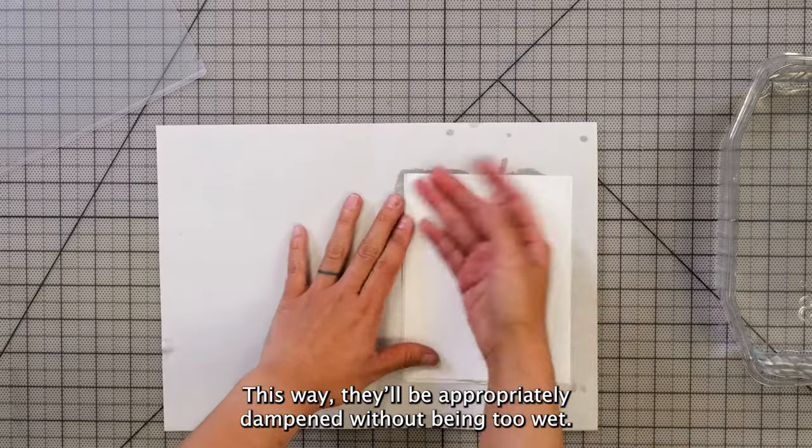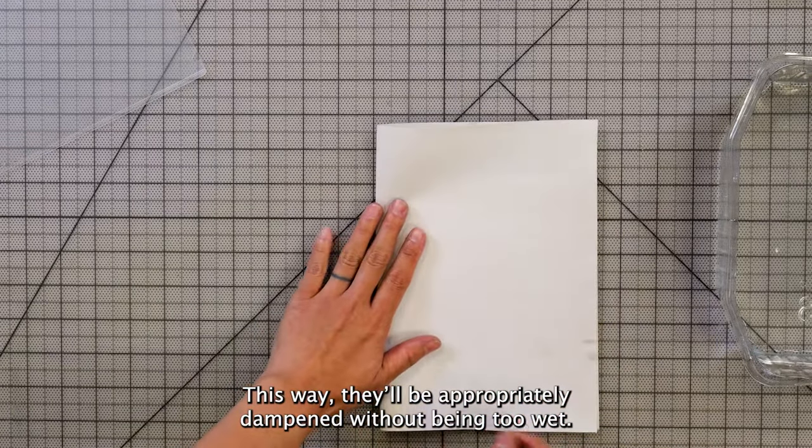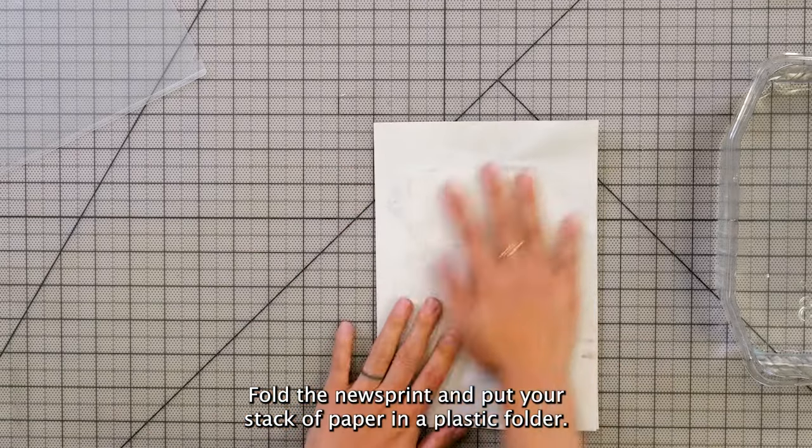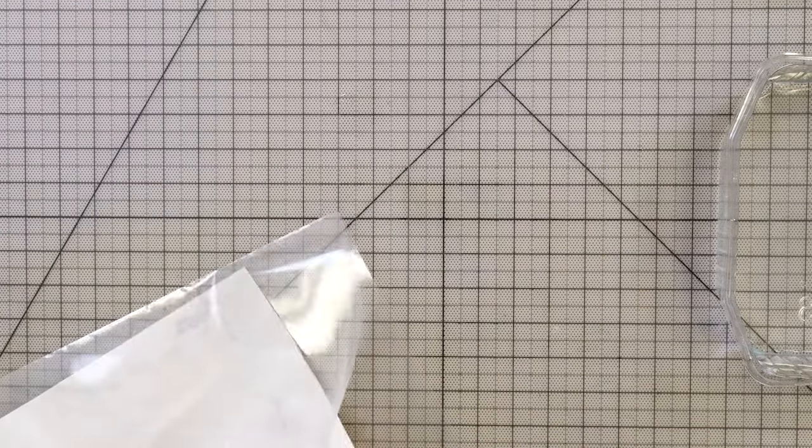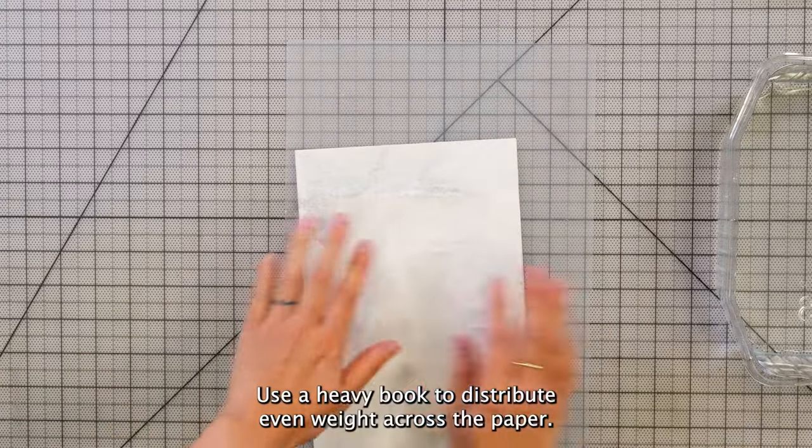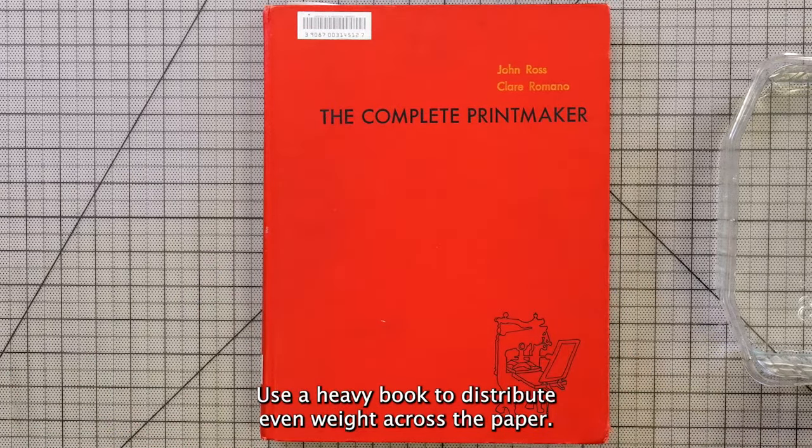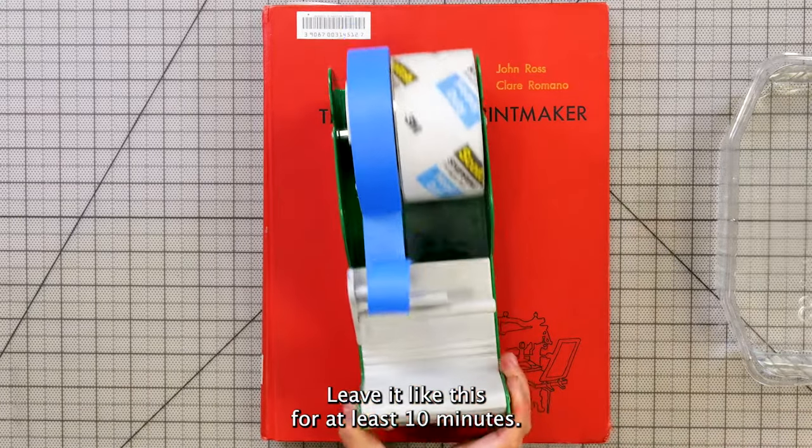This way, they'll be appropriately dampened without being too wet. Fold the newsprint and put your stack of paper in a plastic folder. Use a heavy book to distribute even weight across the paper. Leave it like this for at least 10 minutes.